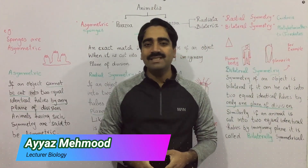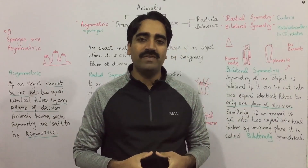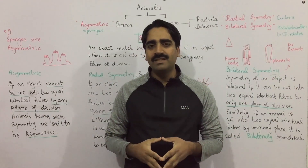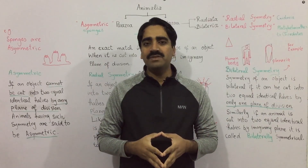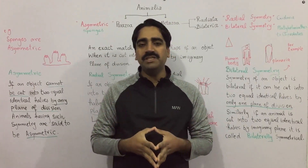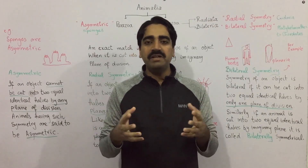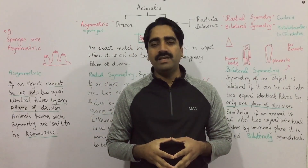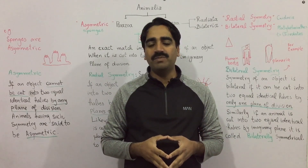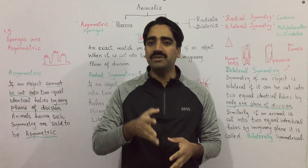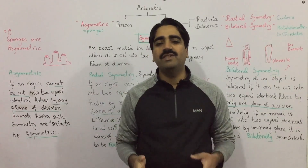What is symmetry? Symmetry is an exact match in size and shape of an object when it is cut into two halves. The resulting halves must be identical to each other, must be the mirror image of each other, and the plane of division cutting the object into two halves must be passing through the center of the object.